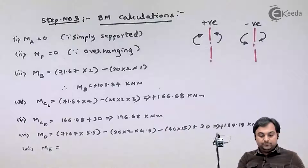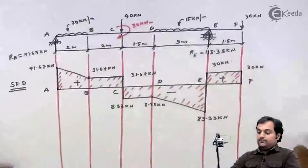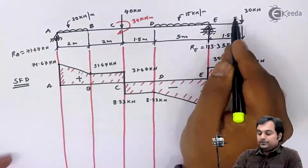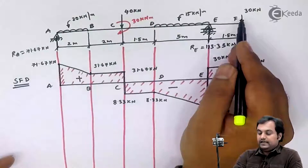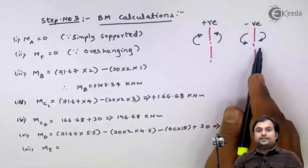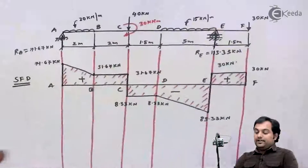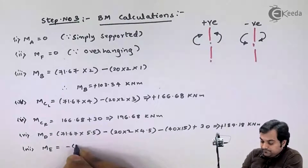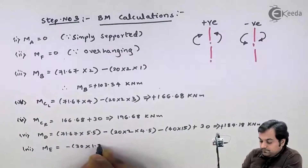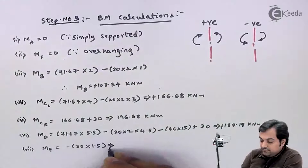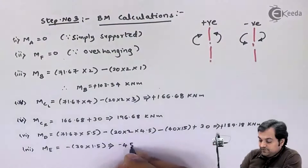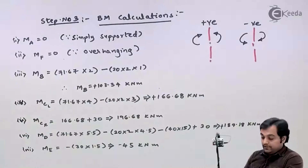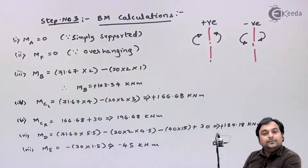Finally, the moment at point E: taking the section at E and considering forces to the right, the 30 kilo Newton force produces a clockwise moment to the right, which is negative. So moment at E equals minus 30 × 1.5 = minus 45 kilo Newton meter. With that, I have all the bending moment values and we can now draw the bending moment diagram.